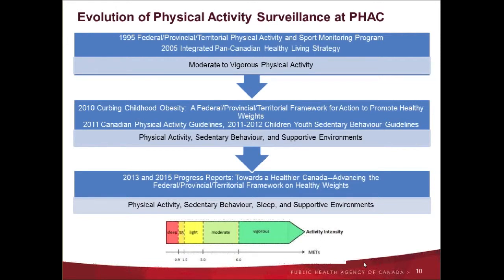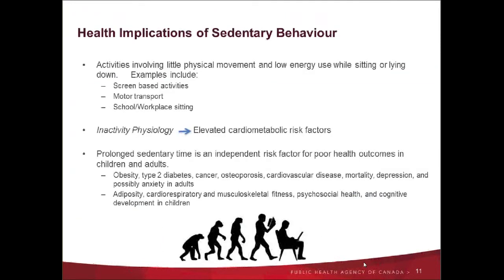Starting in 2010, there was a need to expand the agency's reporting from just leisure time moderate to vigorous physical activity, to different types of physical activity as well as sedentary behaviour and their upstream determinants, with the announcement of the FPT framework to curb child obesity and the release of physical activity and sedentary behaviour guidelines in 2011 and 2012. The FPT curbing childhood obesity framework identified the need to make the environment supportive of physical activity, and new indicators were required to better inform adherence to guidance. In the years following, work was conducted to identify surveillance indicators, resulting in progress reports released in 2013 and 2015, in which sleep was added based on evidence showing its link to healthy weight.